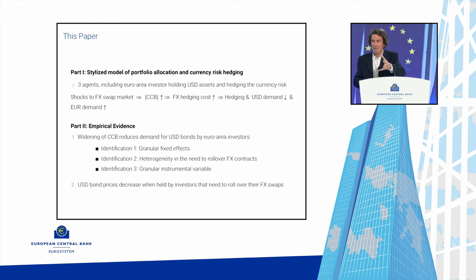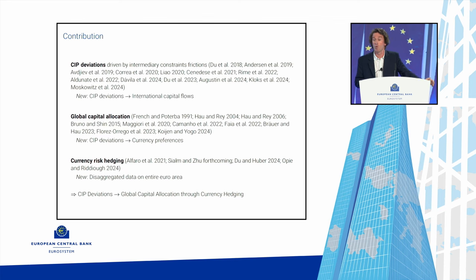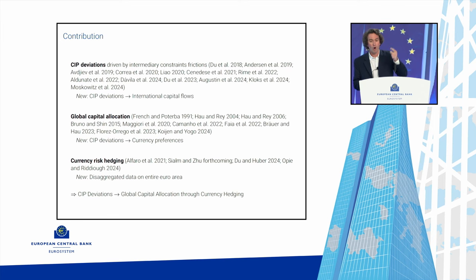The pricing impact is mostly on bonds held by these unlucky investors, and most of the action is in the USD corporate bond market. Our main contribution is to show a causal impact of CIP deviation on global capital allocation through a currency hedging mechanism. We contribute to three streams of the literature: CIP deviation, global capital allocation, and currency risk hedging.